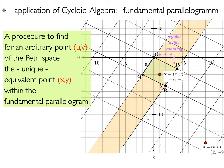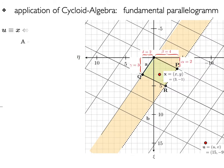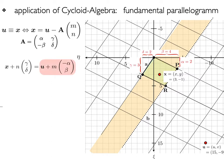For instance, the regular initial marking is defined like this and we want to find the equivalent element within the fundamental parallelogram. From the formula to test equivalents, we deduce this vector equation which defines two lines in red and in blue, meeting at the point c, d.